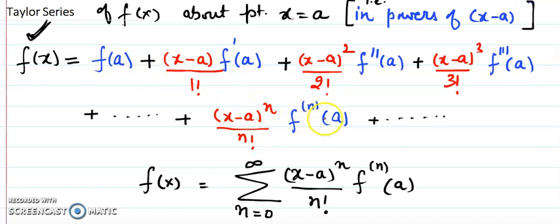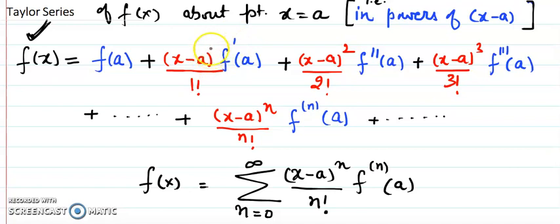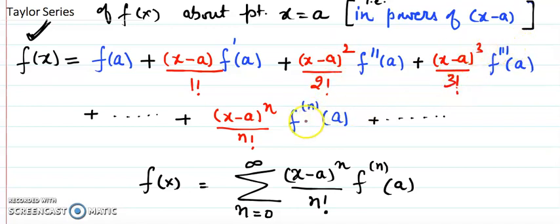We can write the nth term. What we observe is: there is a term with no derivative and (x minus a) to the power 0. With one derivative, the power is 1 and denominator is 1 factorial. With the double derivative, power is 2 and 2 factorial. Third derivative has power 3 and 3 factorial. So the nth derivative has power n and n factorial.